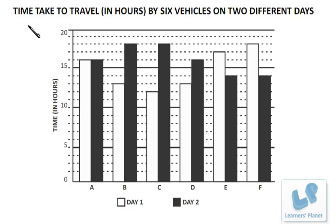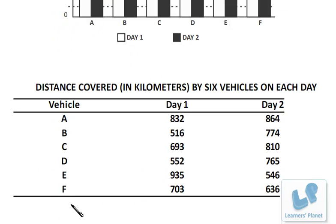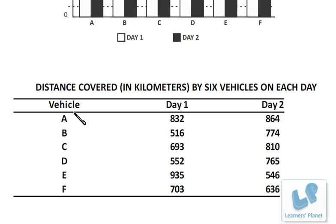Here the first set of questions. We are given a bar graph that shows time taken to travel in hours by six vehicles on two different days - day one and day two. And apart from that, we are given a table showing the distance covered by the vehicles on day one and day two. So let's go straight to the first question now.